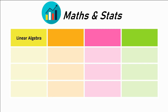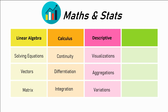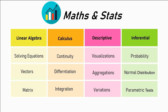First is linear algebra, where you learn to solve equations and learn about vectors and matrices. Then comes calculus — cover continuity, differentiation, and integration. After that comes statistics. First is descriptive statistics, used to describe the data, which involves learning to visualize data, aggregate data, and check for variation. Next is inferential statistics — making inferences about a population using a sample. Understand the concept of probability, learn what normal distribution is and some of its characteristics, and learn what parametric tests are. That's more than enough to get you started.